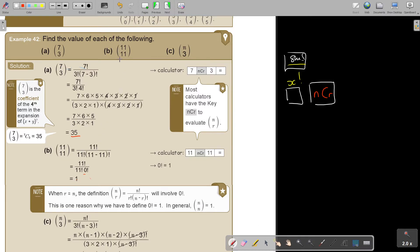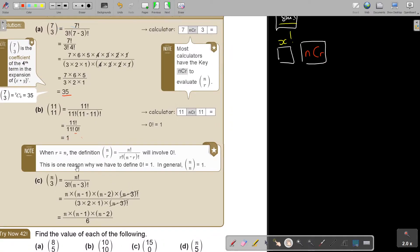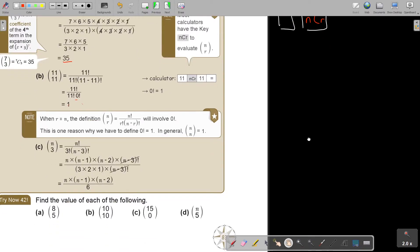And then, in this one, I cannot just use the NCR, because there's not the value. Keep it like that. Then say 3, and N minus 3. This is going to be N times N minus 1 times N minus 2 times N minus 3. This is going to be 3, 2, 1, N minus 3. That cancel. I'm ending up with N times N minus 1 times N minus 2 over 6. And that is my final answer.